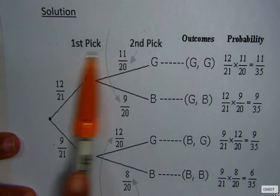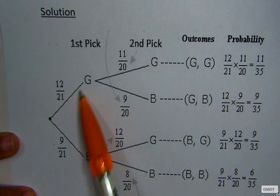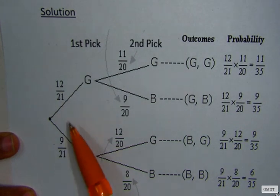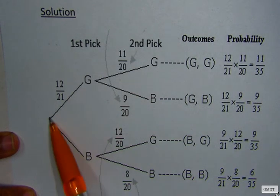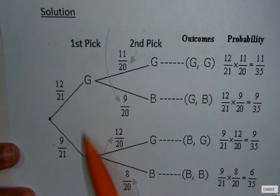This is what a tree diagram looks like. Here are the branches. The question said that he picked two marbles. So the first time he picked the marble, he could have picked a green or a blue.